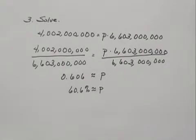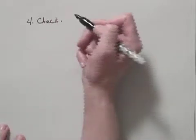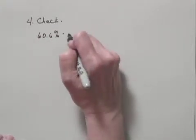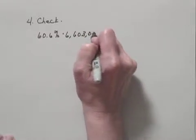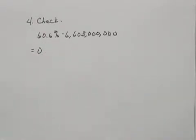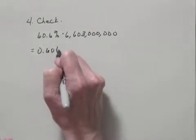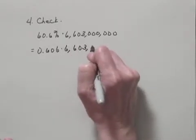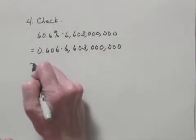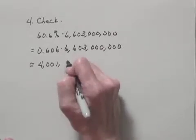Now, there are several ways we could check this. That's the next step in our process, to check the solution, the possible solution in the original problem. We could find 60.6% of 6,603,000,000. Let's do that. This is equal to converting 60.6% to decimal notation. We have 0.606, and we're multiplying this times 6,603,000,000. And when we find that product, we find that it's approximately equal to 4,001,418,000.